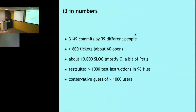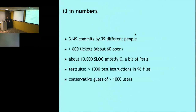A few numbers, since these are the questions people often ask. How many people are involved in the i3 project? At the time I made the slides, we had a bit more than 3,000 commits by 39 different people. But the set of people who are actually regular contributors is much lower — less than five people. We have handled over 600 tickets and about 60 are open right now, as feature requests or bug reports.